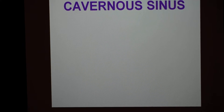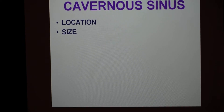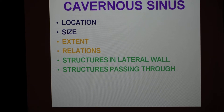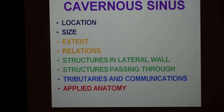We have seen the location and various aspects of the different venous sinuses. Now, a very important topic — and a very important short note as well — is the cavernous sinus, which we are going to see in detail. The cavernous sinus can be described under the headings of location and size, extent and relations, structures present in the lateral wall, structures passing through the cavernous sinus, tributaries and communications of the cavernous sinus, and lastly, applied anatomy of the cavernous sinus.